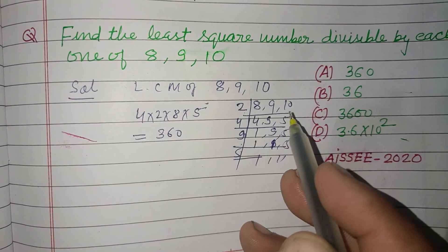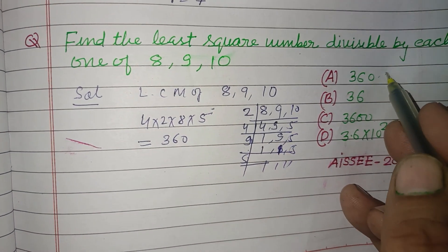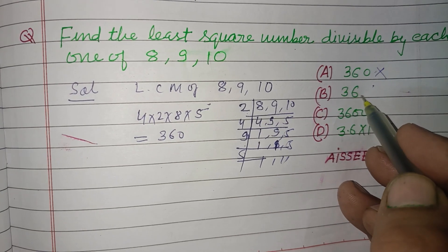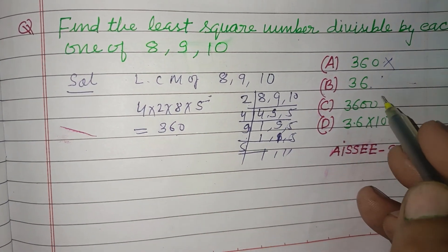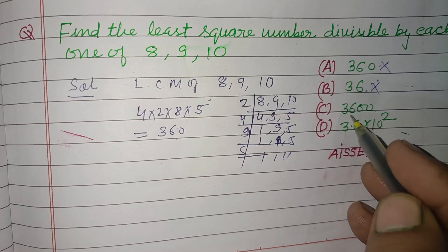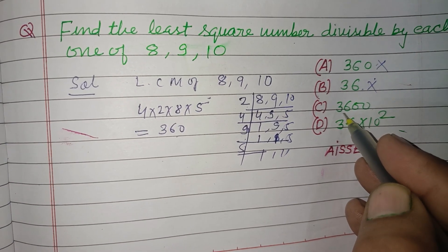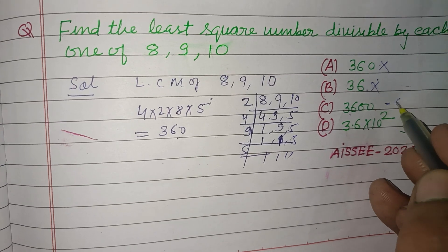360 is divisible by this and a square number, but it is not a perfect square. This is a perfect square but not divisible by 360. And 360... 3600 is a perfect square of 60.